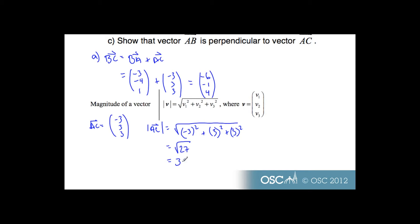Simplifying this, I know this is 3√3, because it's the square root of 9 times 3, and 9 becomes 3. So the magnitude of AC is 3√3. That's how long this vector is.